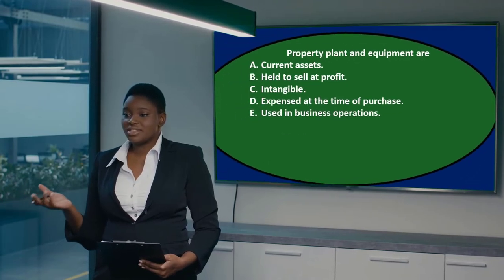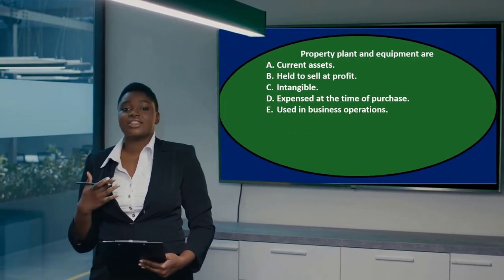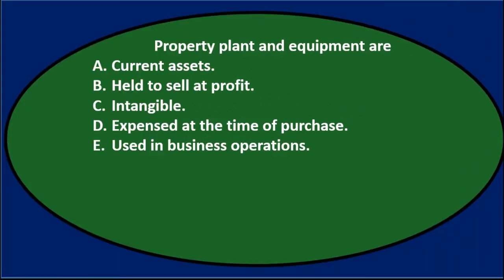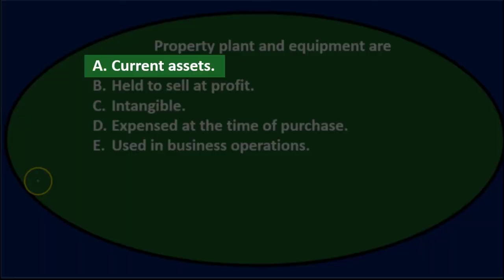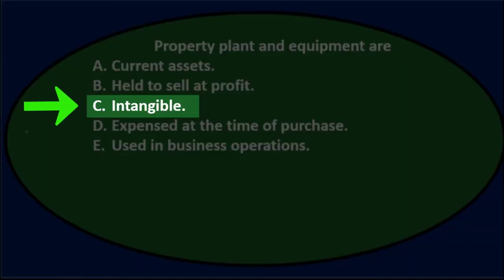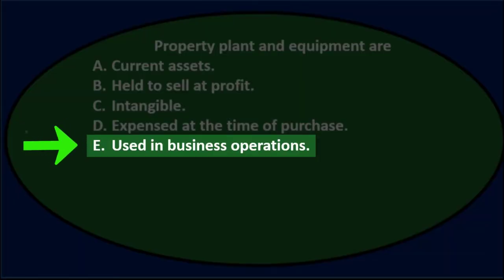In this presentation, we will take a look at multiple choice questions related to property, plant, and equipment. First question: Property, plant, and equipment are A. Current assets, B. Held to sell at profit, C. Intangible, D. Expensed at the time of purchase, E. Used in business operations.